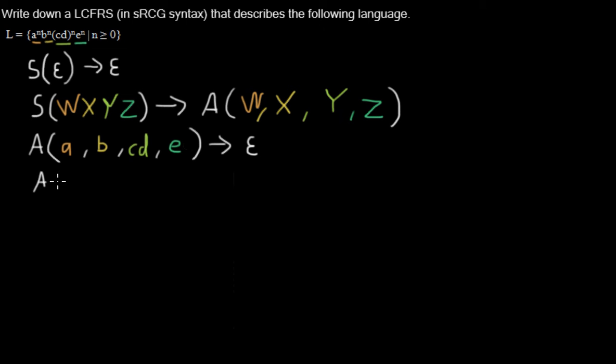Now I need the recursive rule where A generates me again any four strings. And this one depends on another A. So here, the A will have generated the w string, which includes any number of a's. And I want to add just another a to it. It doesn't matter if I put the a first or last. Then the A generates also the x string, where I will just add another b to it, and the y string where I will just add another cd to it, and the z where I will just add another e to it.